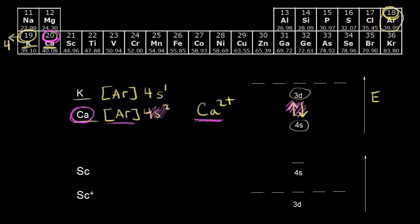For potassium, once we accounted for argon, we had one electron. For calcium, we had two. Going to the next element, scandium, we'd have three electrons to worry about after argon. This is where things get weird — we now have to think about the d orbitals, and things are very complicated once you hit scandium because the energies change.